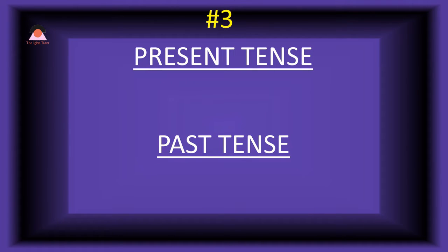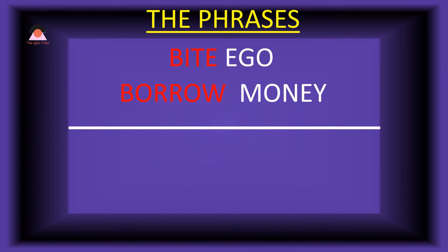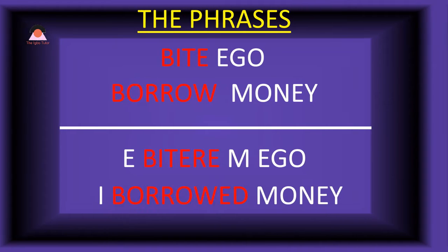Number three. The present tense here is 'biteh,' which means 'borrow.' The past tense is 'bitehre,' also meaning 'borrowed.' Present tense phrase: 'biteh-ego,' which means 'borrow money.' Past tense: 'e-bitehre m'ego' — I borrowed money.